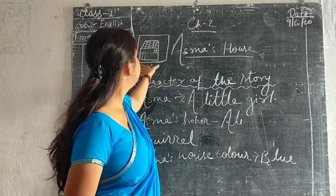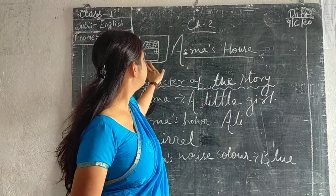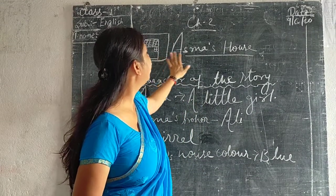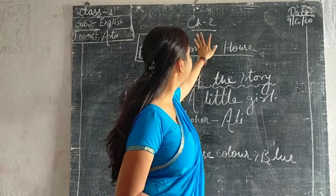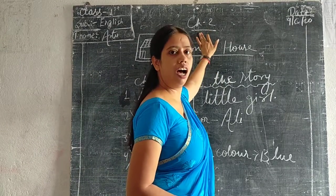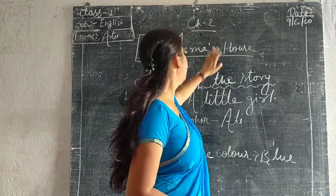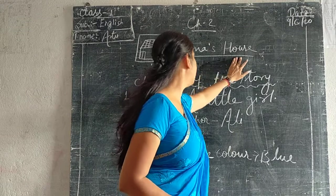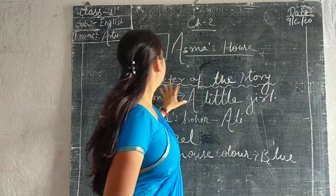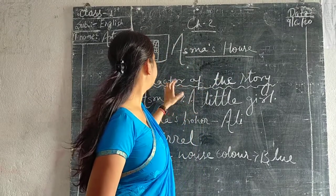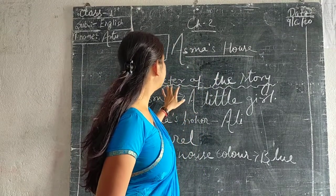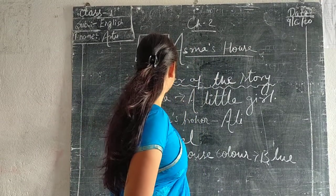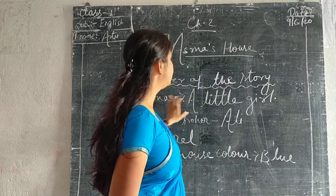This is Asma's house. It's your logo, and then after, write down the chapter number. Then after, write down the chapter name, like Asma's House.